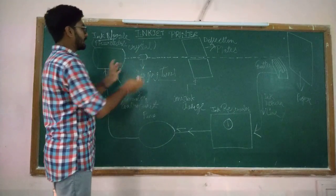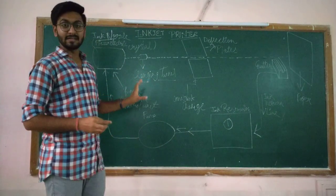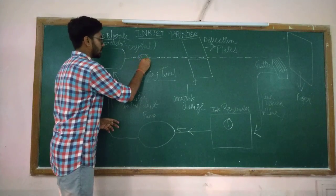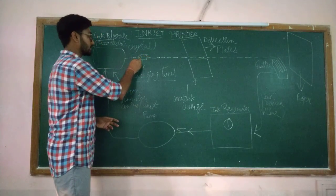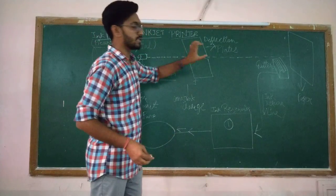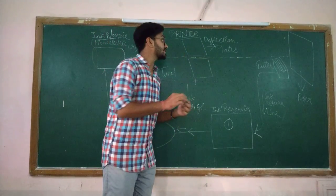While if we turn on the electricity, then it charges all the electrons of the droplets and then it is given to the deflection coils.